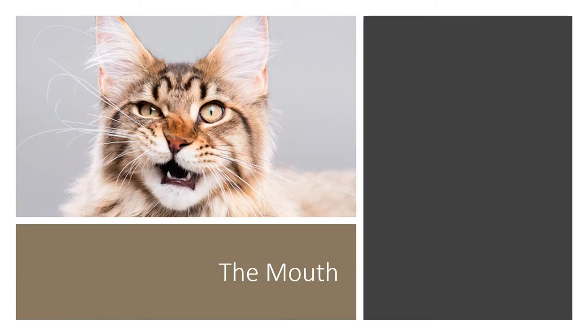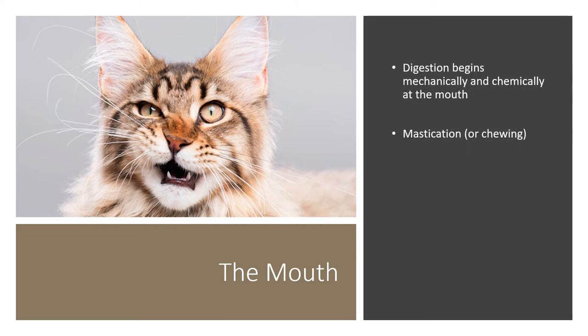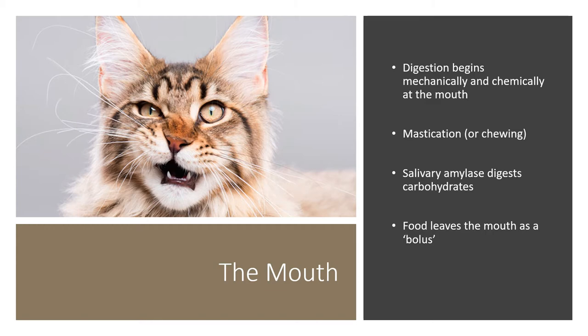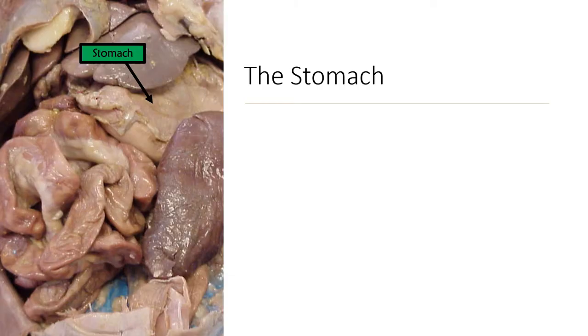Digestion always begins at the mouth via two processes: mechanical and chemical. Mechanical digestion involves mastication, or the act of chewing, and chemical digestion involves salivary amylase, which is an enzyme that digests carbohydrates. The food leaves the mouth as a bolus into the esophagus.